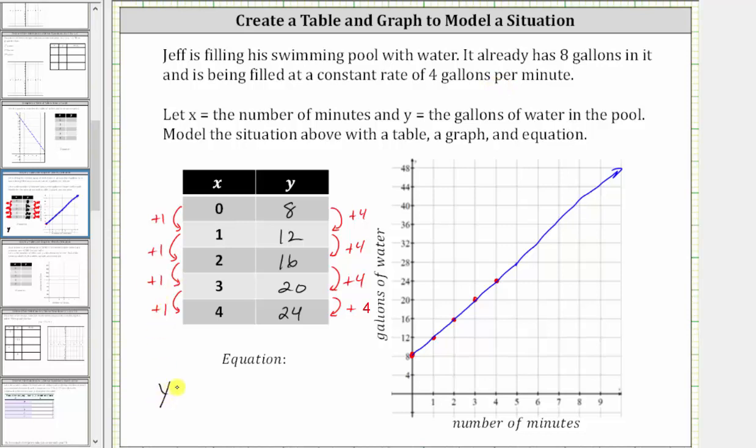Therefore, y is equal to the starting amount of eight gallons plus four times the number of minutes, which in our case is four times x, or 4x. We can also express the equation as y = 4x + 8.